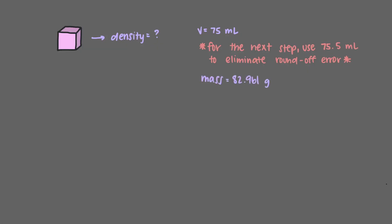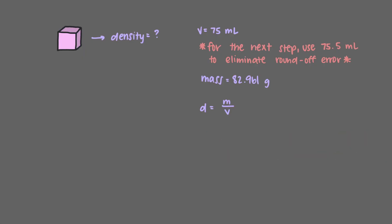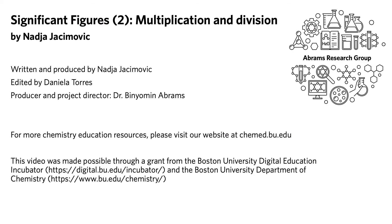The mass of the cube is 82.961 grams. We now have the mass and the volume, so we can calculate the density. The value with the least number of significant figures is the volume — which to the correct significant figures was 75 milliliters, giving us two significant figures. We only used 75.5 milliliters to eliminate roundoff errors. Our final result is 1.1 grams per milliliter, as this value contains two significant figures. By taking this problem step by step, we were able to express the density of the cube to the correct number of significant figures.